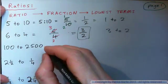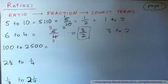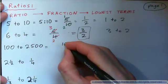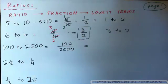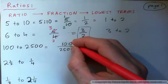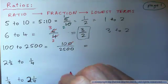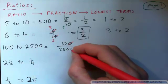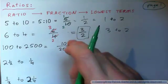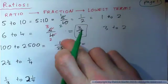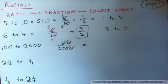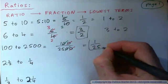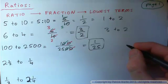100 to 2,500. Write that as a fraction: 100 over 2,500. Put that in lowest terms. Here's a trick: you can divide the top by 10 — 100 over 10 is 10, so you just cross off a zero. Then divide the bottom by 10, cross off a zero. Then divide both by 10 again: 10 divided by 10 is 1. Or you could think: I just divided the top and bottom by 100. You're left with 1 over 25 — that's the answer. Or you could say 1 to 25.